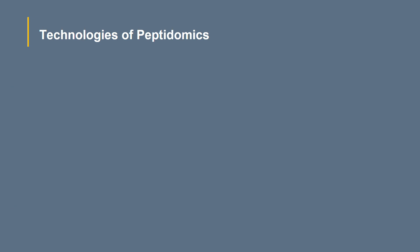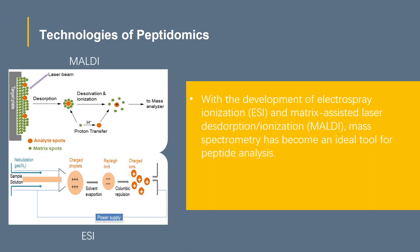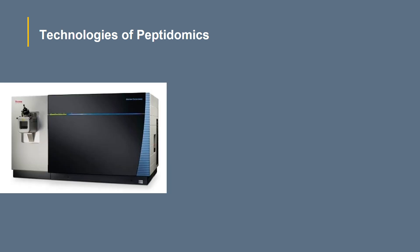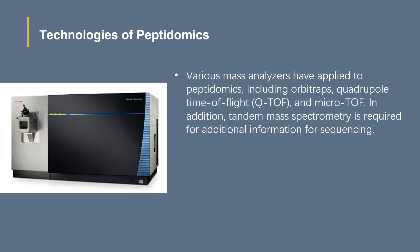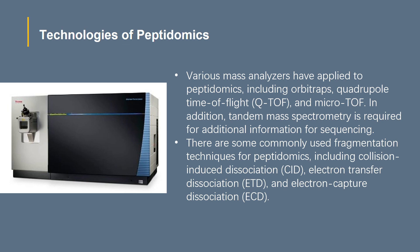With the development of electrospray ionization and matrix-assisted laser desorption ionization, mass spectrometry has become an ideal tool for peptide analysis. These soft ionization methods can ionize intact peptide molecules and accelerate them into a vacuum without substantial fragmentation. Various mass analyzers have been applied to peptidomics, including Orbitraps, quadrupole time-of-flight, and micro time-of-flight. In addition, tandem mass spectrometry is required for additional information for sequencing. Commonly used fragmentation techniques for peptidomics include collision-induced dissociation, electron transfer dissociation, and electron capture dissociation.